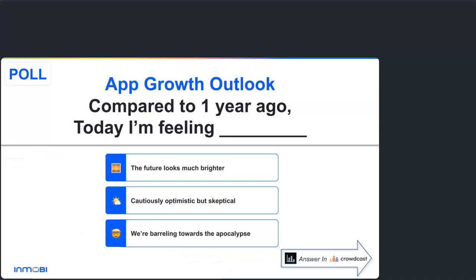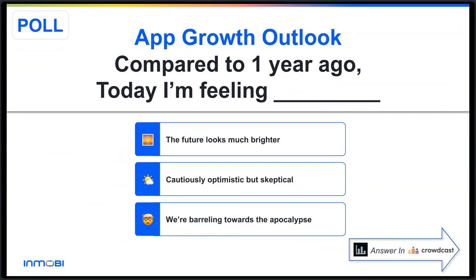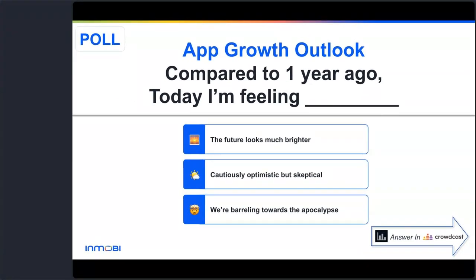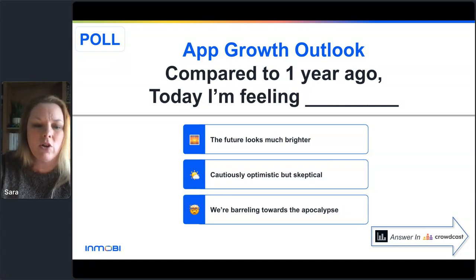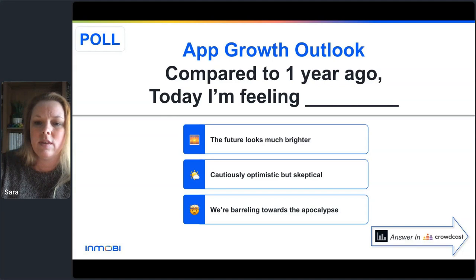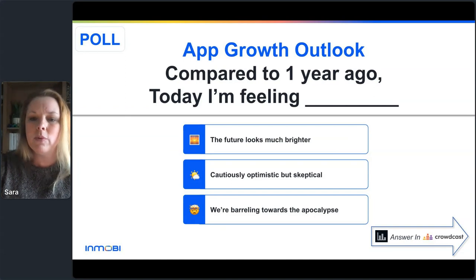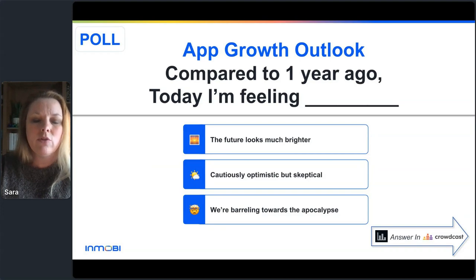Sarah: From the media partner perspective, we've found a great use case for AI and machine learning at InMobi, which is why we've devoted resources to building automation for SKAN — so we can rapidly iterate on campaign IDs and recycle them when we figure out something isn't working. Let's move on to our last section: what's next. There's one last poll about your sentiments on app growth outlook today compared to a year ago — is the future looking brighter, are you cautiously optimistic, or do you think we're barreling towards the apocalypse?